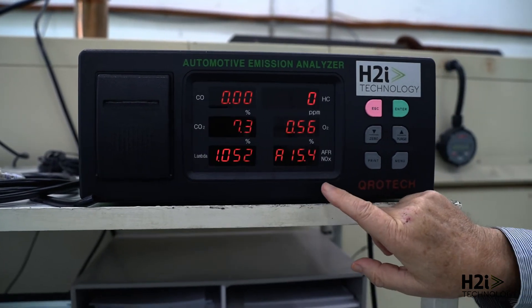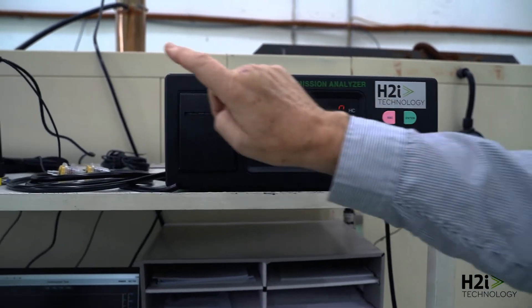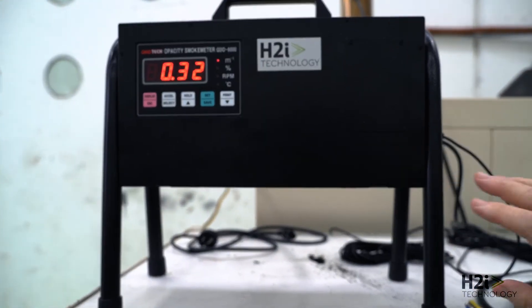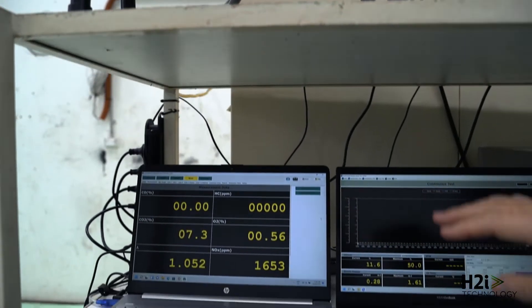Over on the other machine is our opacity meter, and the opacity meter importantly shows us exactly how much smoke we're using. That's giving us a percentage density of the smoke.